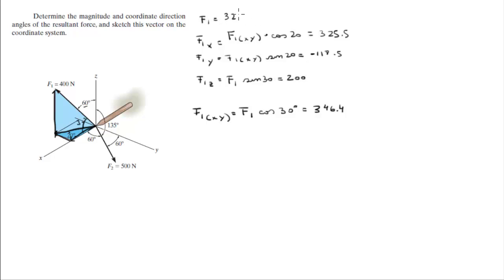So let's write F1 as 325.5i minus 118.5j plus 200k.